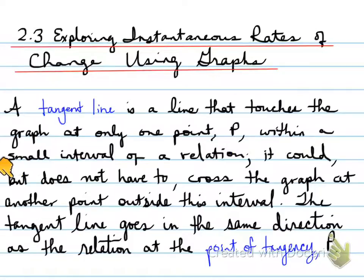It could, but does not have to, cross the graph at another point outside this interval. The tangent line goes in the same direction as the relation at the point of tangency, P.